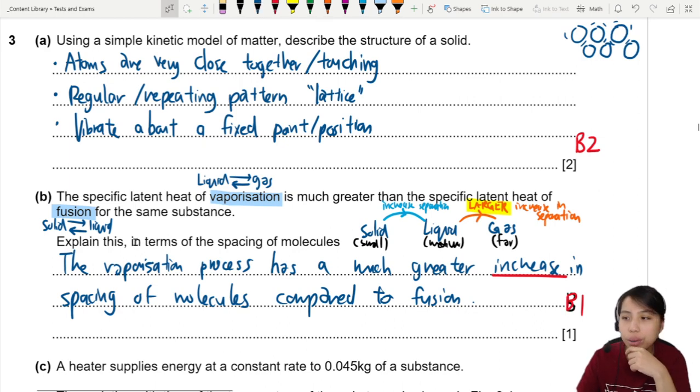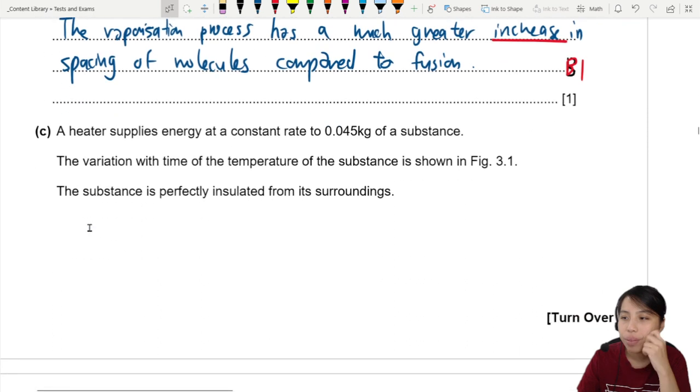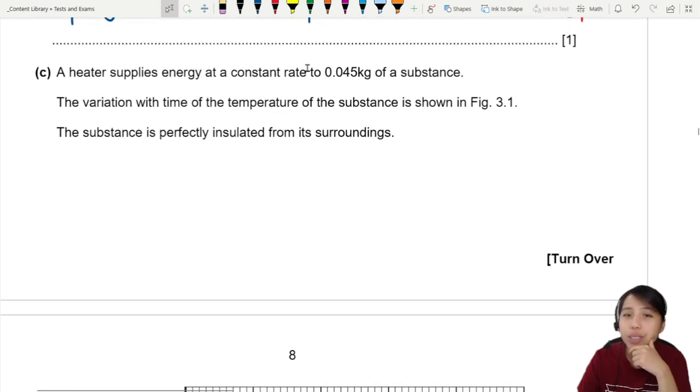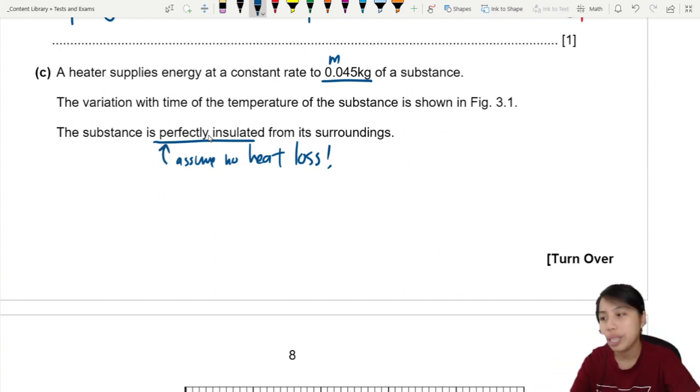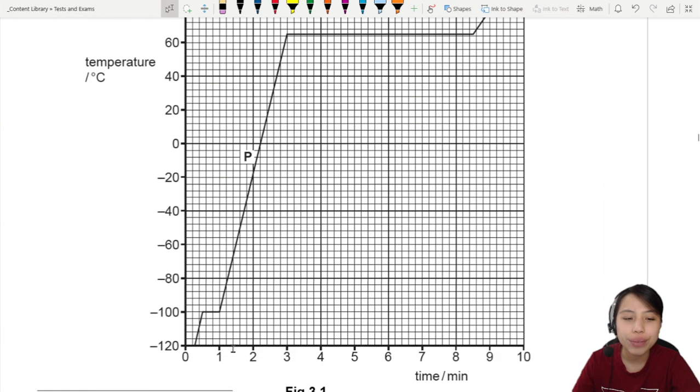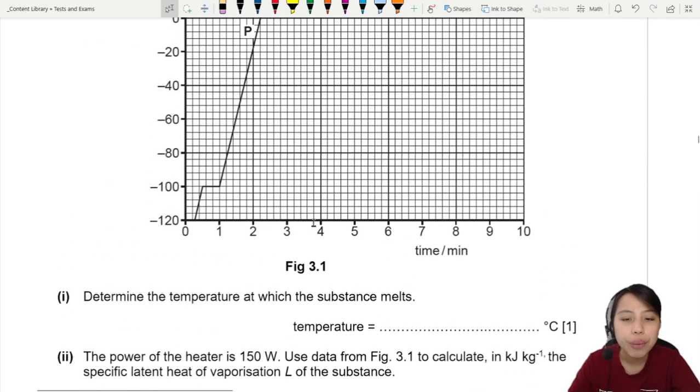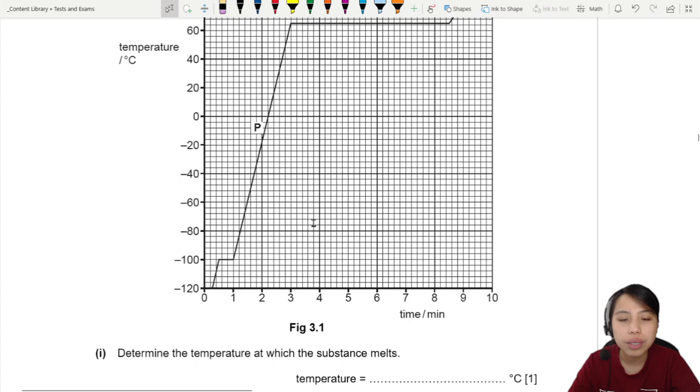So then we come to part C, where we look at an experiment. A heater supplies energy at a constant rate to 0.045 kg. The variation is shown and the substance is perfectly insulated from its surroundings. Perfectly insulated here means assume no heat loss. So you do not have to account for energy gain or loss to the environment.